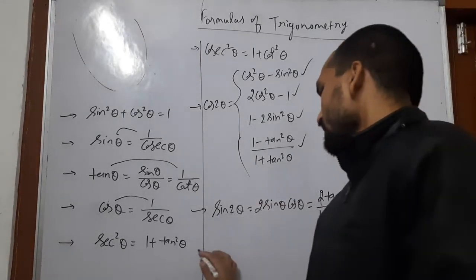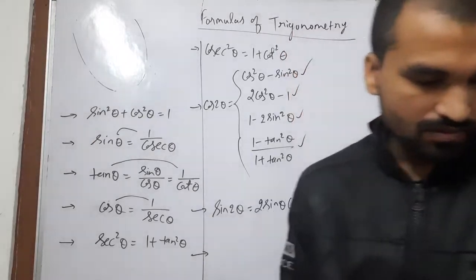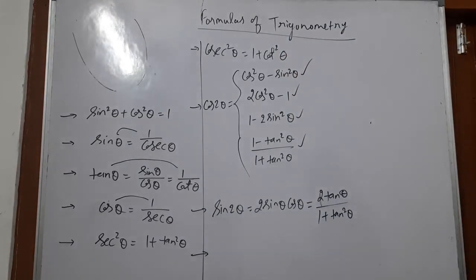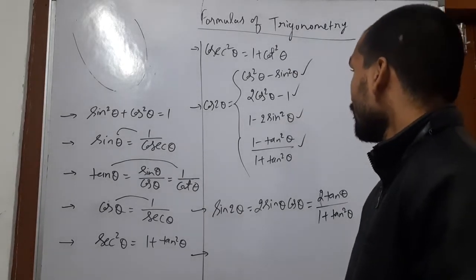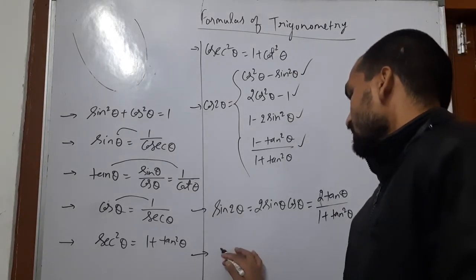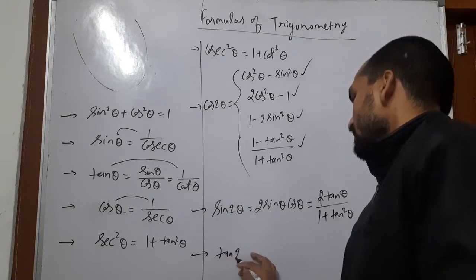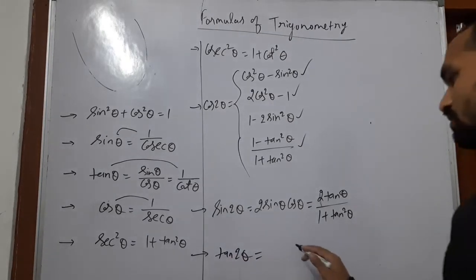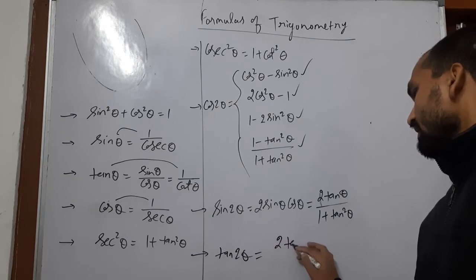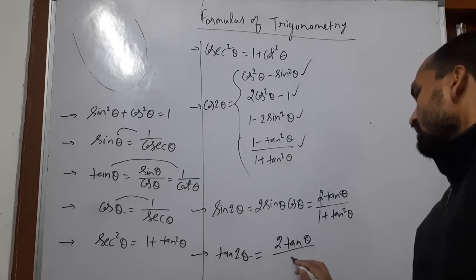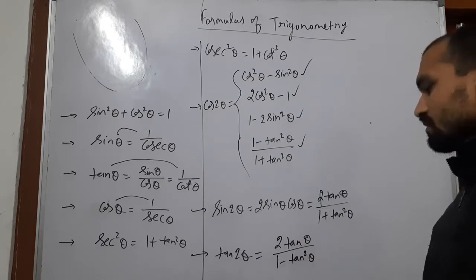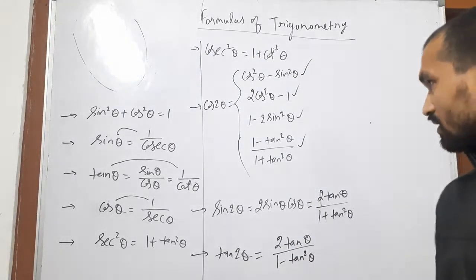Now the next formula is tan 2 theta. Tan 2 theta is equal to 2 tan theta upon 1 minus tan square theta.